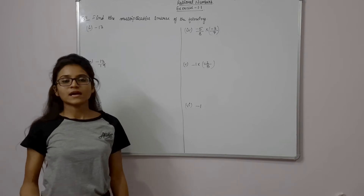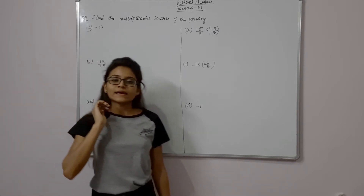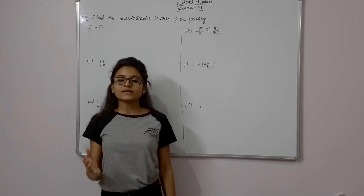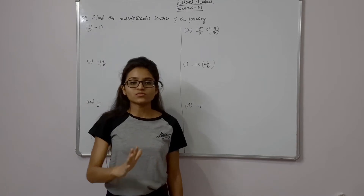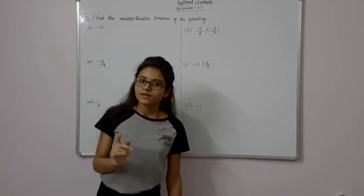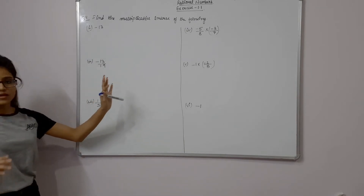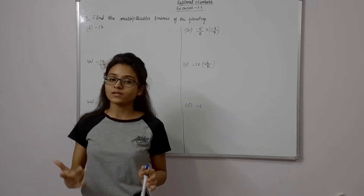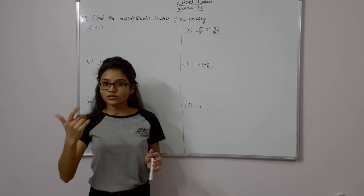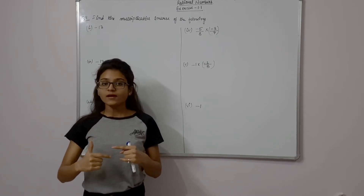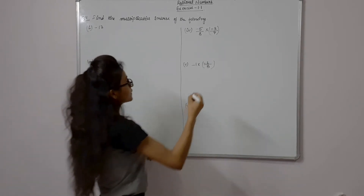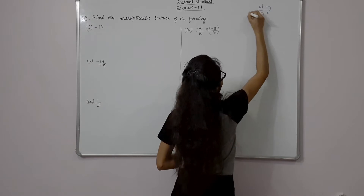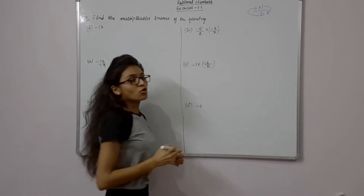I have taught the multiplicative inverse. In the additive inverse, the answer is 0. In the multiplicative inverse, we want the answer to be 1. Whatever number we are given, we take its reciprocal — the numerator becomes the denominator and the denominator becomes the numerator. When we write numerator upon denominator and interchange them, that is the reciprocal.